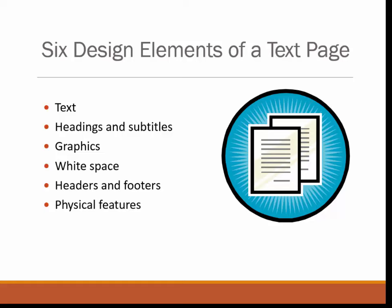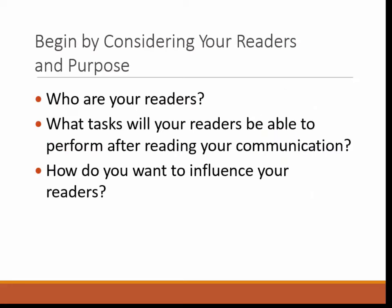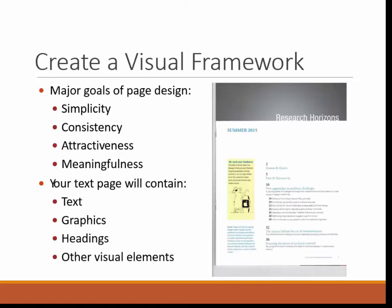How do you plan a design? You begin by thinking about your readers — who are they, what do you want them to get out of this, and how do you want to influence them? Essentially, you'll ask yourself the same ten questions mentioned in Module 1. Create a visual framework for your page design. Your major goals are simplicity, consistency, attractiveness, and meaningfulness. Your text page will contain text, graphics, headings, and other visual elements. This text page consists of two columns, so the layout is visually attractive, and if we looked at different issues of the same publication, we would find a consistent design that makes it easy to find information.